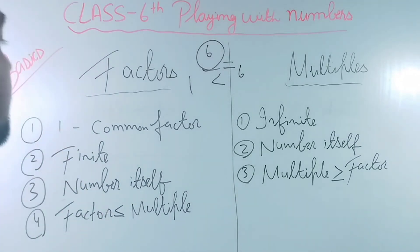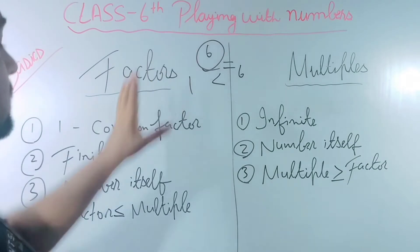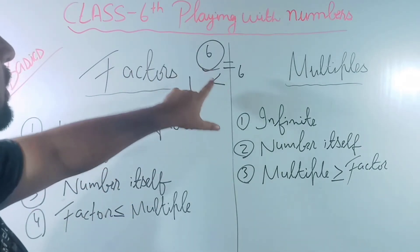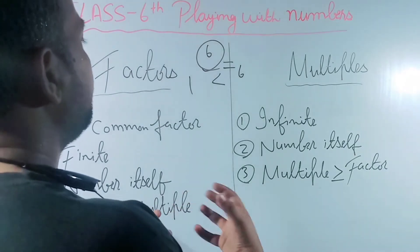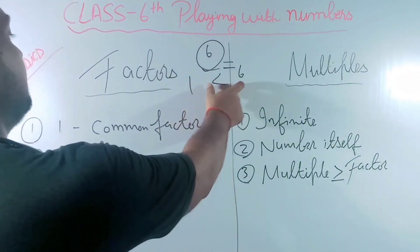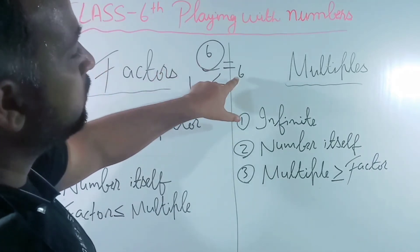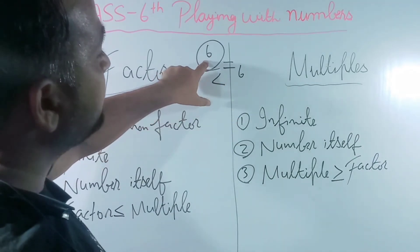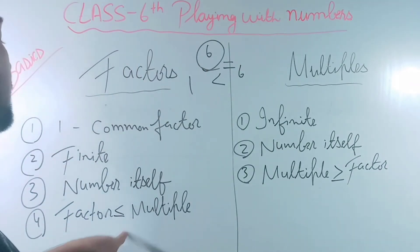Factors are finite, means there is a limit. Number itself is also a factor. As we have found the factors of 6, so 6 will also come. So 6 is equal to 6, so number itself is a factor.